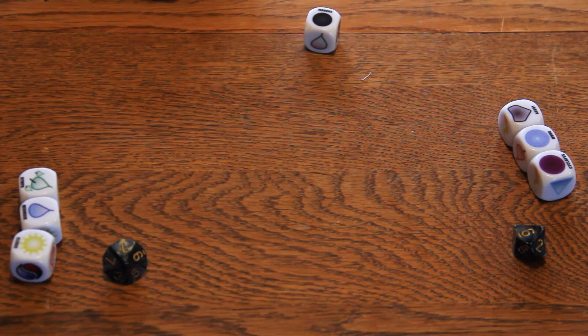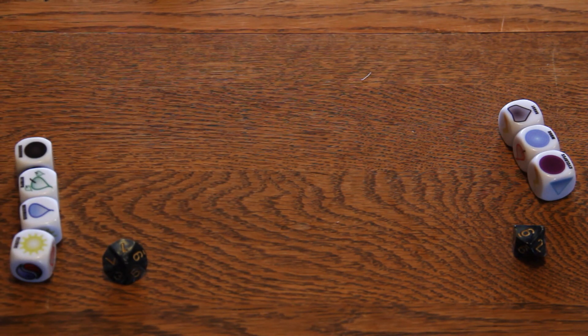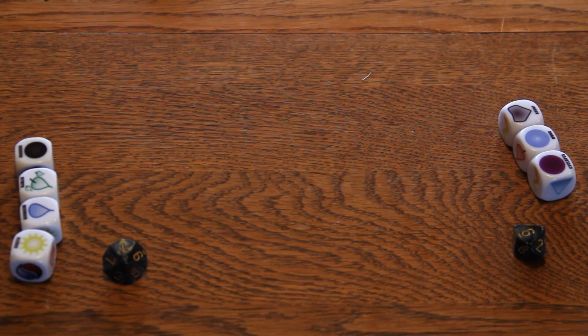When a player successfully eliminates an opponent, they take one of the eliminated player's heroes to add to their own team. Having a larger team gives you more options, but you still only roll 2 dice per turn, or 3 with swarm or growth active.